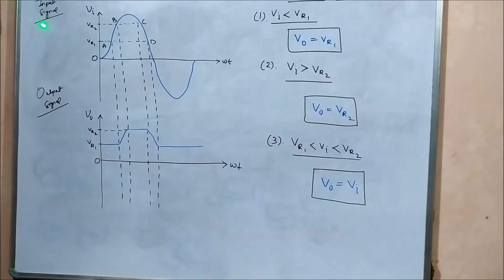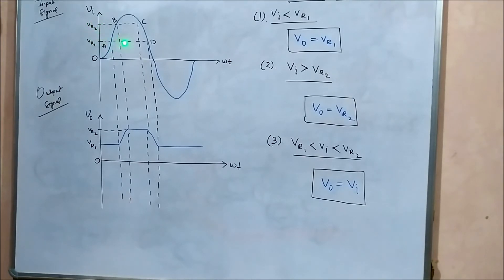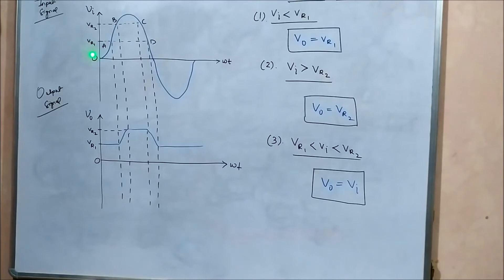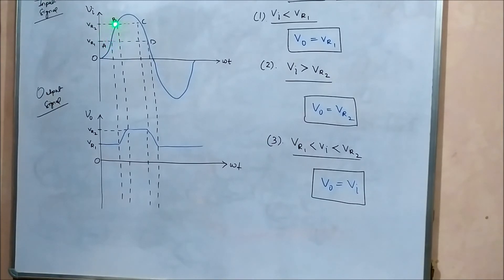The input signal is a normal sinusoidal signal with positive and negative half cycles. The two important DC voltage reference points are Vr1 and Vr2. The signal from O to A lies below Vr1, signifying case one where input voltage is lesser than Vr1. From A to B, the input voltage lies between Vr1 and Vr2, signifying case three. Above point B, from B to C, the input signal is greater than Vr2, signifying case two.